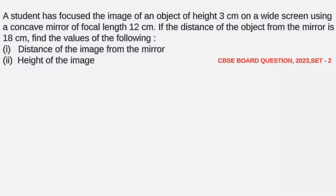It's a question based on a concave mirror. We have an object whose height is 3 centimeter, placed in front of a concave mirror whose focal length is 12 centimeter, and the object distance is given. We need to find out the image distance and height of the image. We'll use the mirror formula to find the image distance and the magnification formula to find the height of the image.